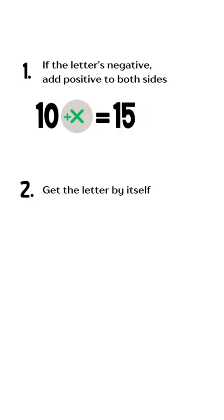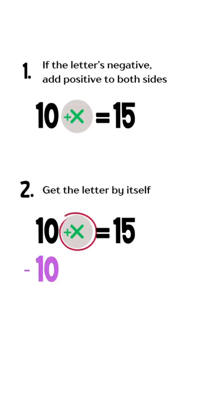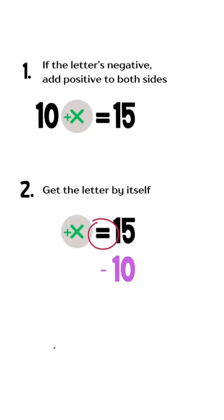Step two, we got to get rid of the number so that that stinky letter is all by itself. So we either add or subtract or divide or multiply, whatever we need to do to get rid of that number. And what we do to one side, we got to do to the other, because that's an equal sign. And we are equal.